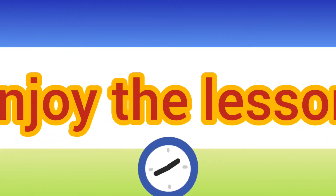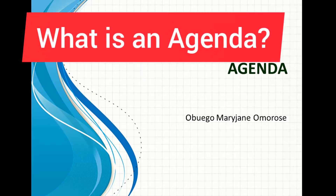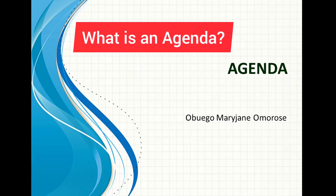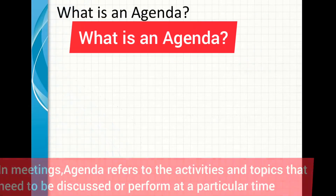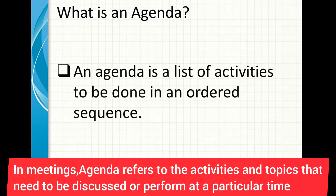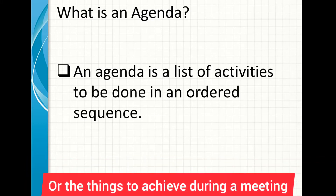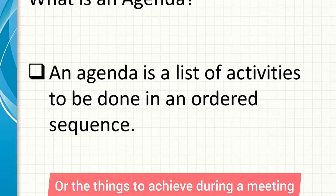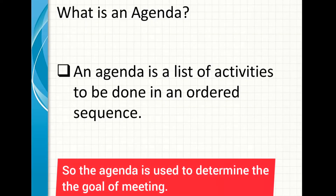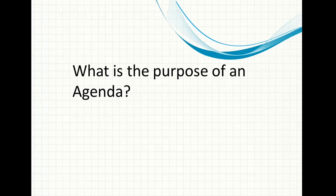So let's get started. What is an agenda? An agenda is a list of activities to be done in an ordered sequence. In meetings, an agenda refers to the activities and topics that need to be discussed or performed at a particular time, or the things to achieve during a meeting.